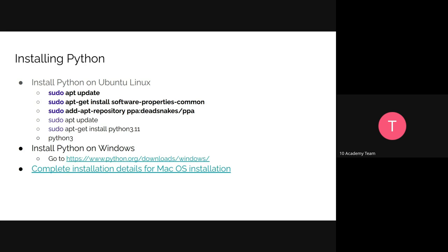If you want the latest Python, you can just say Python. The last line, if you add Python3 -V, it will show you the version, so you can confirm it's installed correctly. If your operating system is Windows, Python has a setup application for that — just go to the provided link and it will show you a step-by-step guide on how to install it. The same goes for Mac OS.